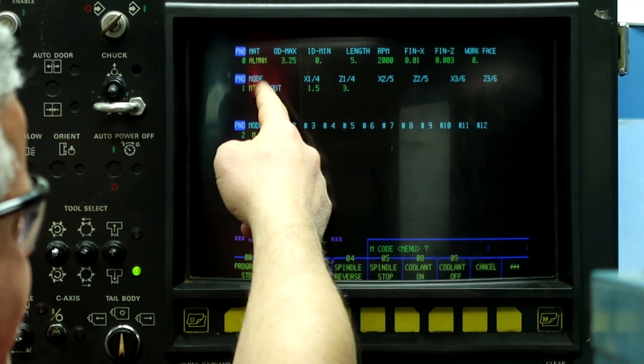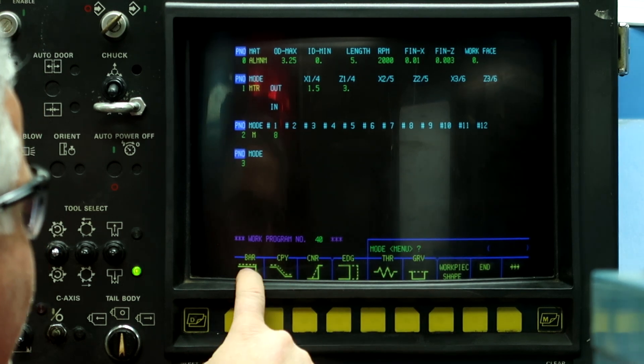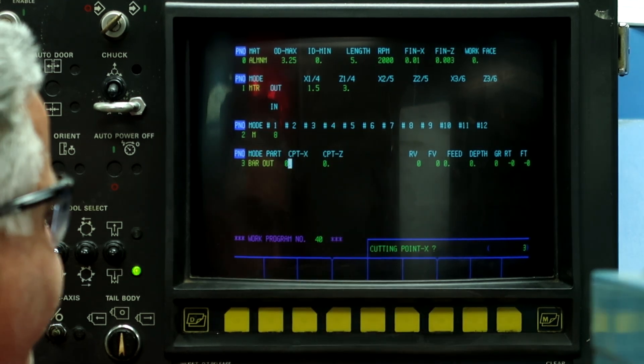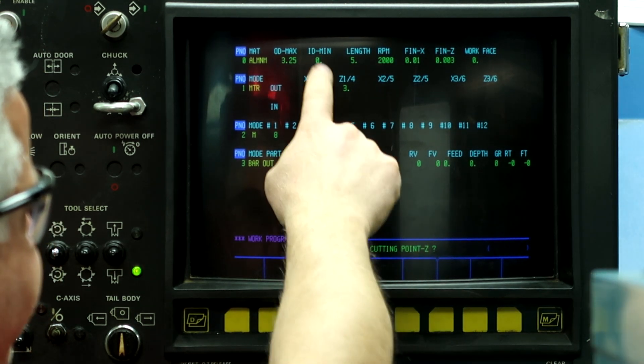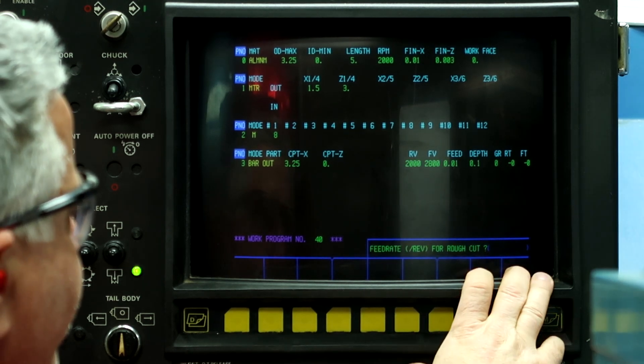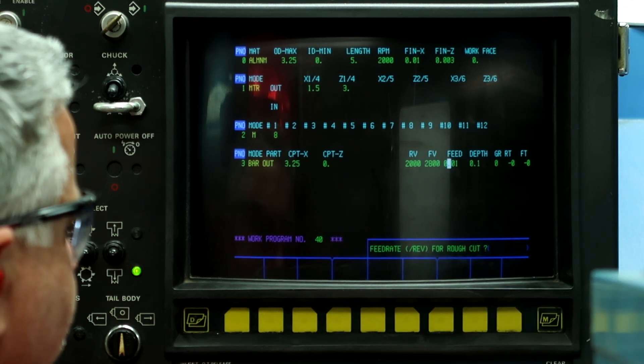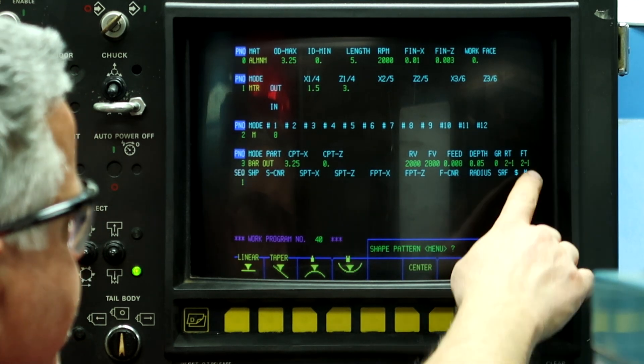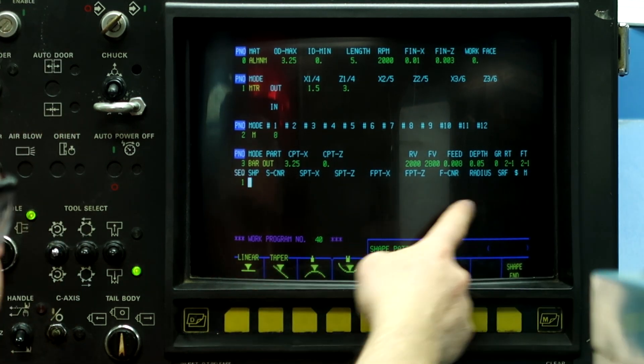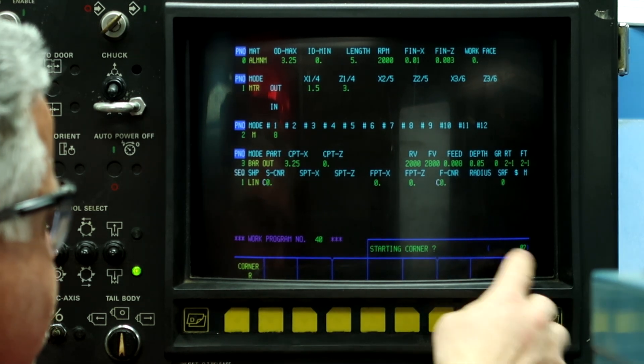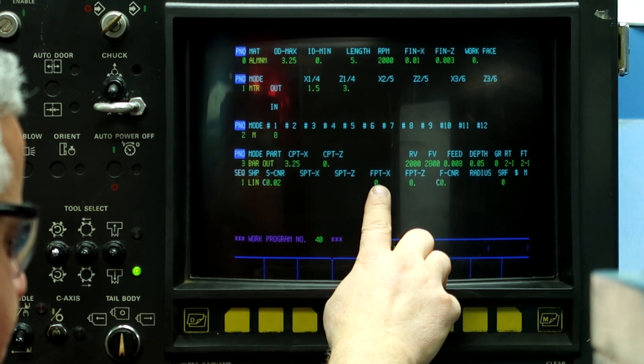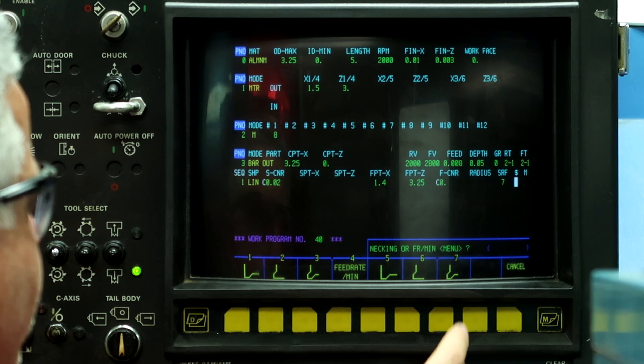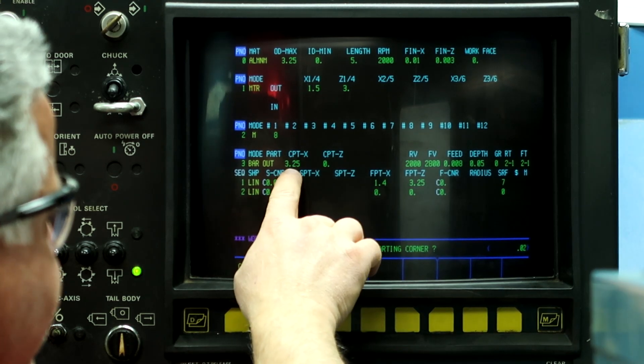So now we can program it normally. Turn on the coolant which is normally process one but now it's process two. And now we're going to do a bar out. Cutting point on X is going to be 3.25. Cutting point on Z is zero which is the face of the part. And we're going to slow the feeds and speeds down a little bit. We're going to use tool two offset one. So now I want to turn a diameter, give me a 20 thousandths chamfer at the front of it, one point four, and I'm going to go back three point two five and I'm going to put a chamfer at the top of the part.